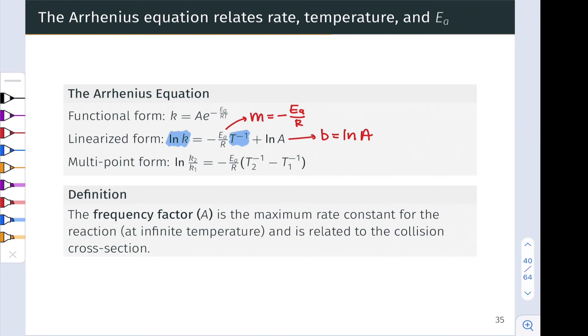By subtracting two versions of the linearized form from each other at two different points, one and two, we get the multi-point form, which we've seen before. And here, thanks to the properties of logarithms, we can say that the natural log of K2 divided by K1 is equal to negative E sub A divided by R times T2 to the negative first power minus T1 to the negative first power. So this allows us, for example, to infer the value of K at point 2 and temperature 2 if we know the value of K at point 1 and the temperature at point 1. Now, what about this A value?